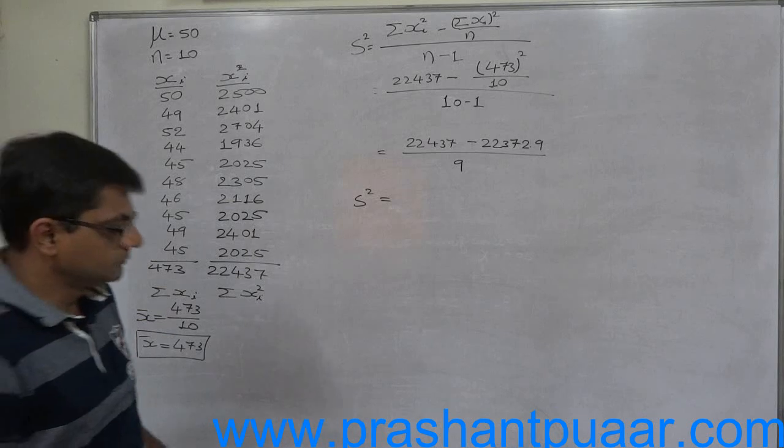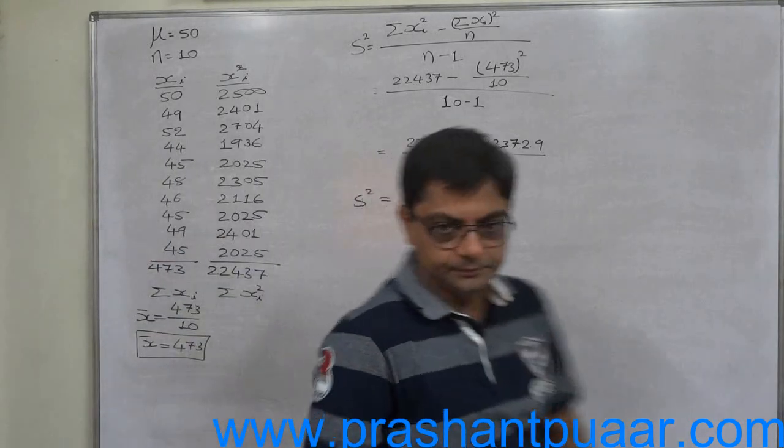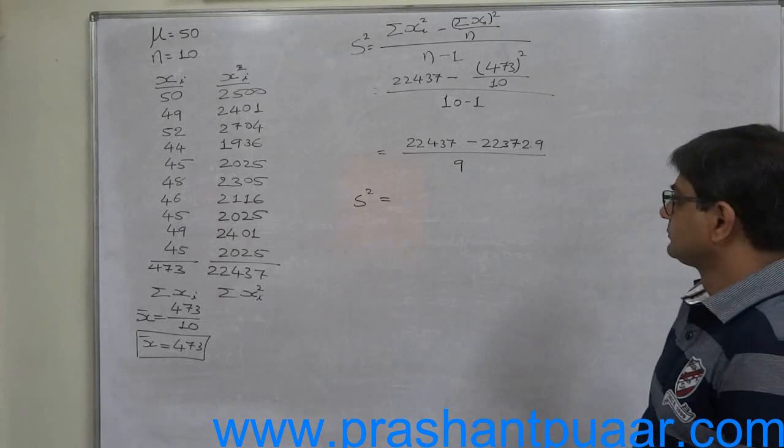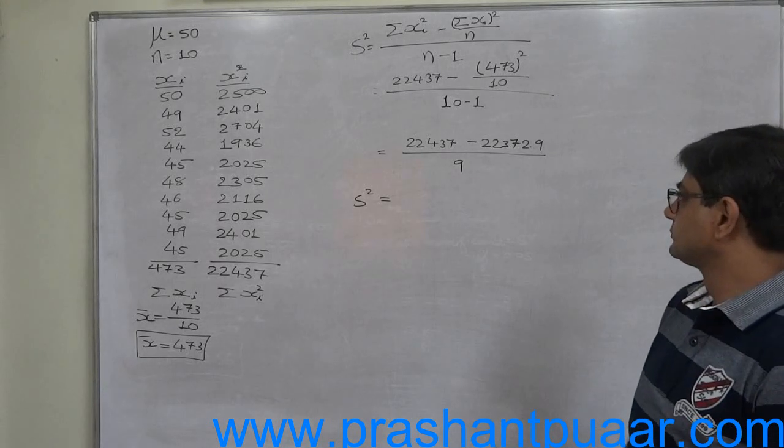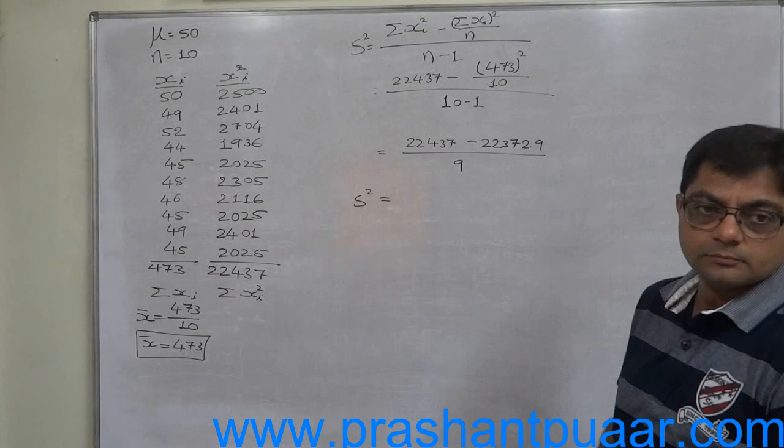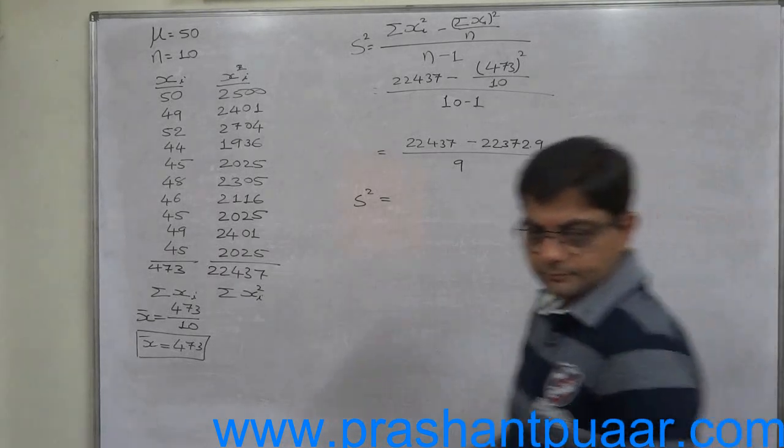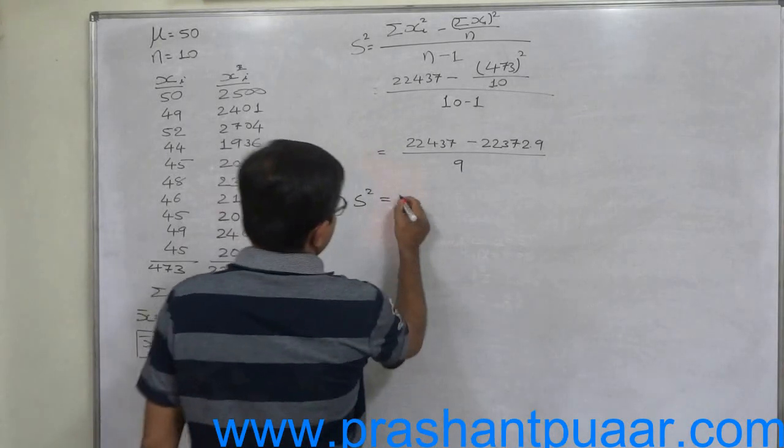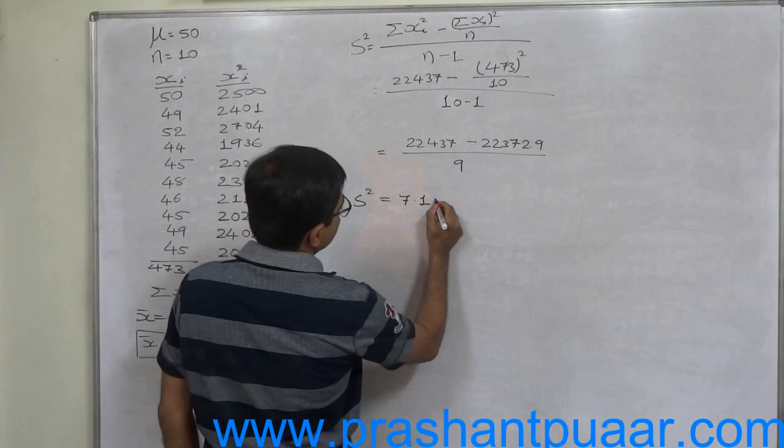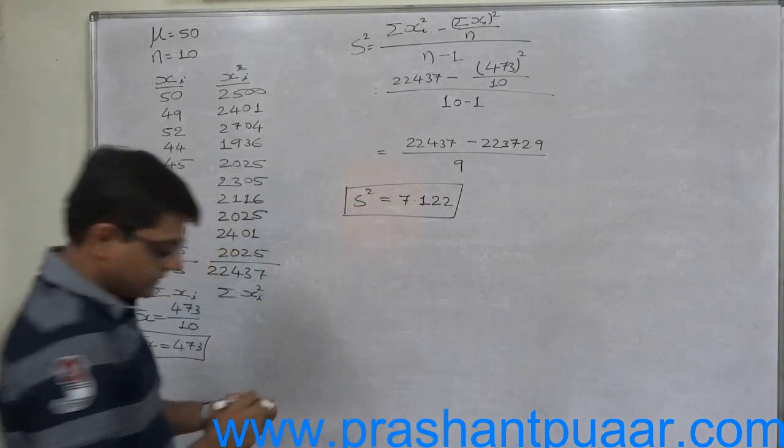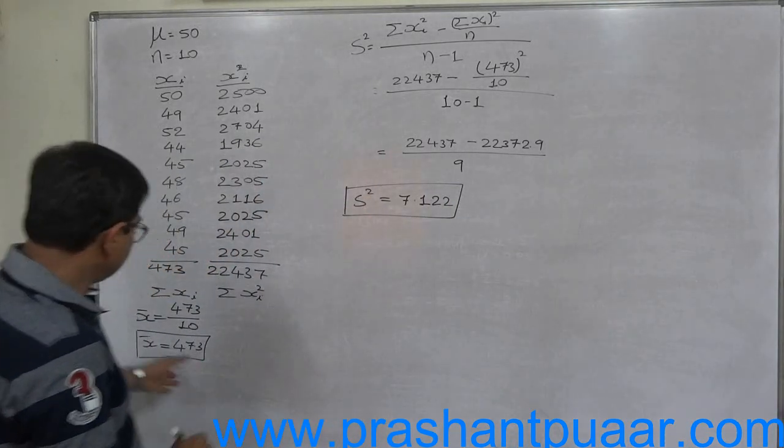Now calculating: 64.1 divided by 9 equals 7.122. So we have the sample variance s² as well as the sample mean. Our list of the available data should be extended by these two values.